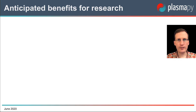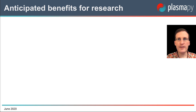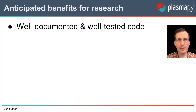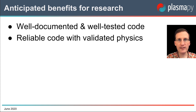PlasmaPy is still fairly early in its development. As we approach version 1.0 in the coming years, we expect a number of benefits — benefits that we know are already occurring for mature packages like AstroPy. This effort will produce well-documented, well-tested, and peer-reviewed code. By working together as a community, we can produce reliable code with validated physics.